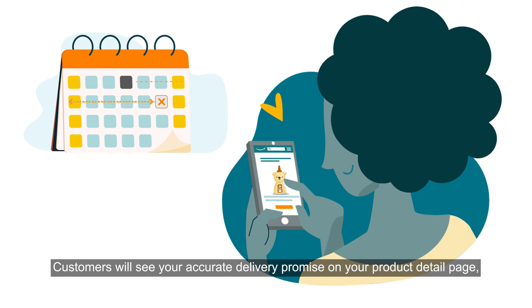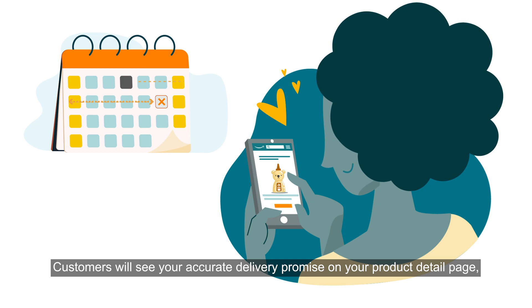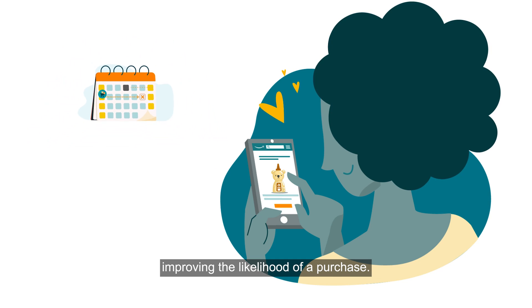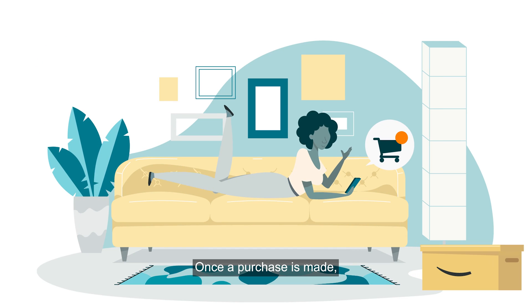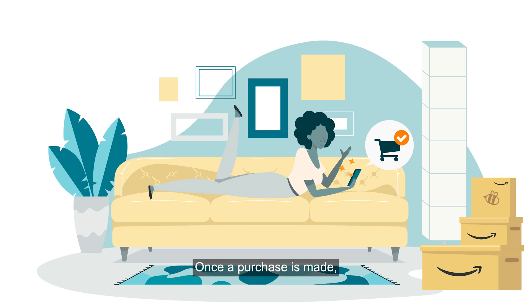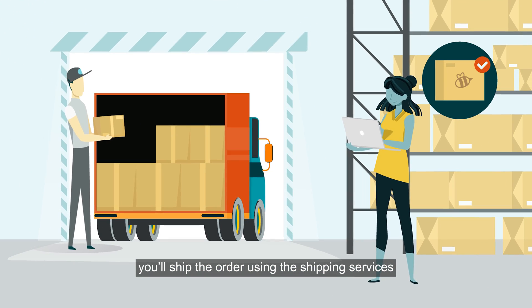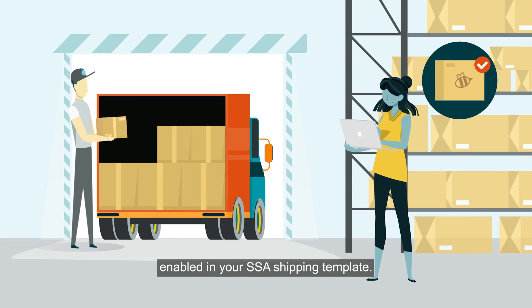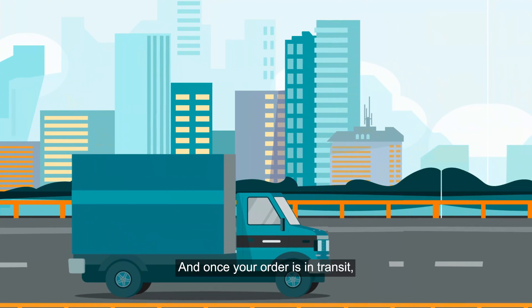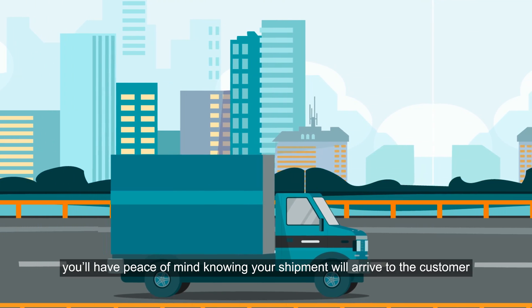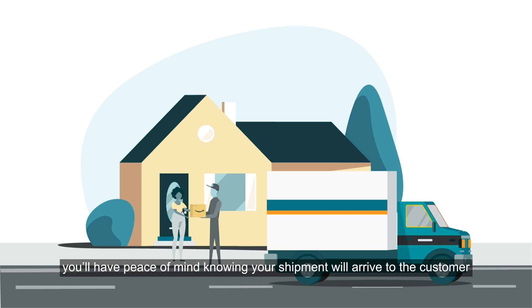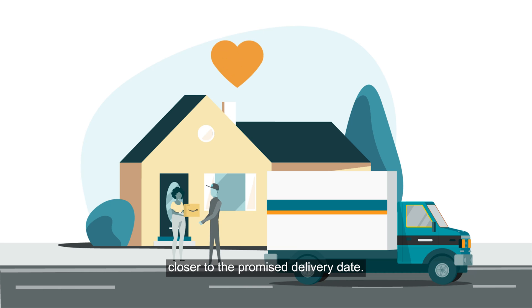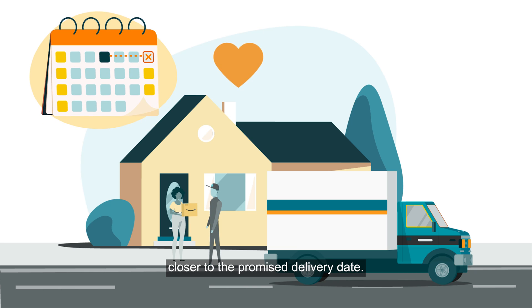Customers will see your accurate delivery promise on your product detail page, improving the likelihood of a purchase. Once a purchase is made, you'll ship the order using the shipping services enabled in your SSA shipping template. And once your order is in transit, you'll have peace of mind knowing your shipment will arrive to the customer closer to the promised delivery date.